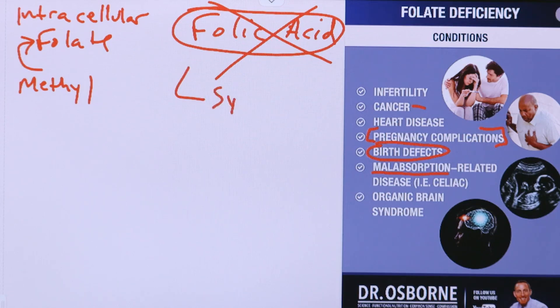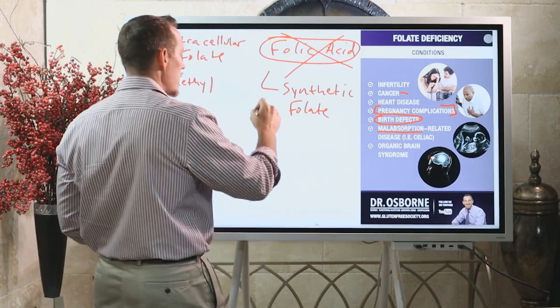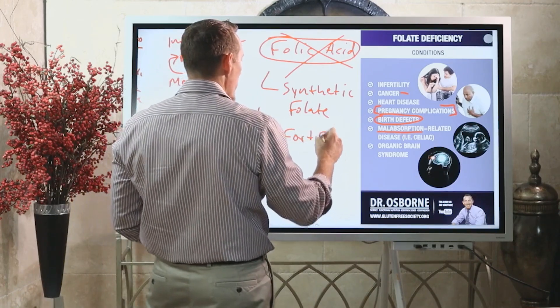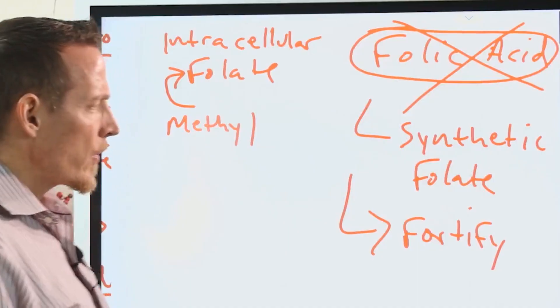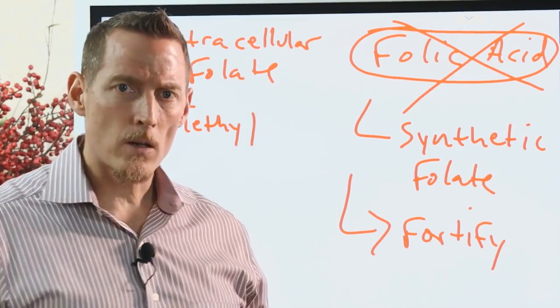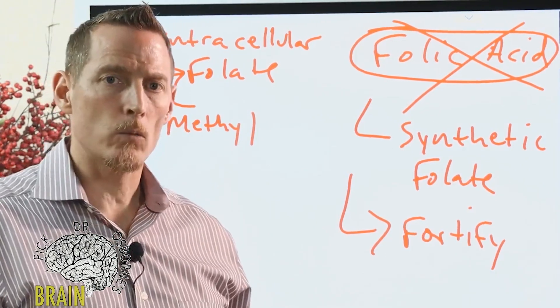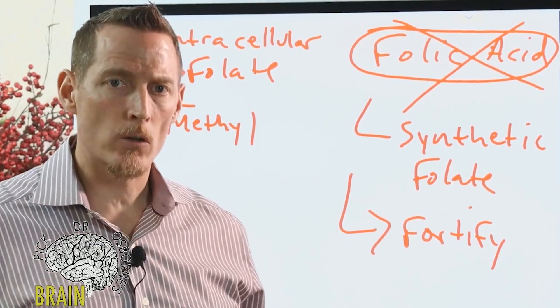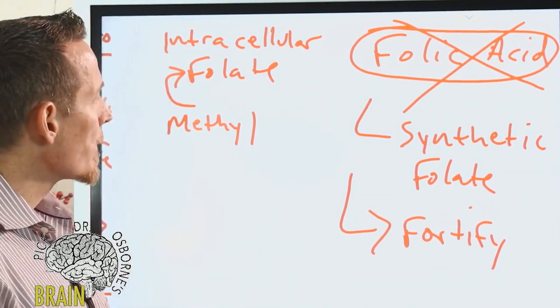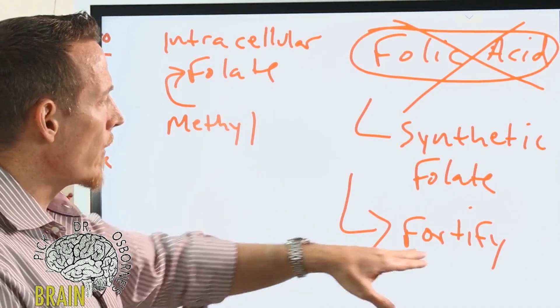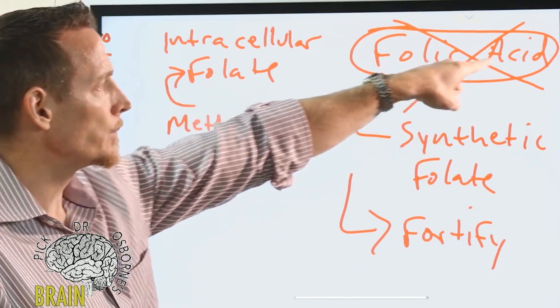Folic acid is a synthetic folate. It's not found anywhere in nature. It's synthetic and used to fortify foods. About 30 years ago, neural tube defects were on the rise, and research showed that folate deficiency would lead to neural tube defects. So food scientists in the United States decided to fortify the food with synthetic folic acid.